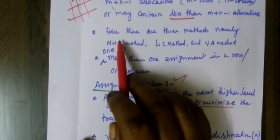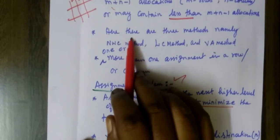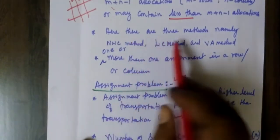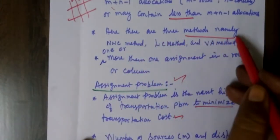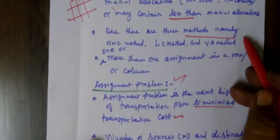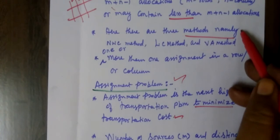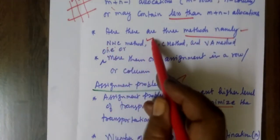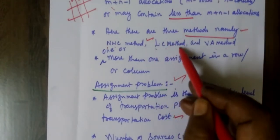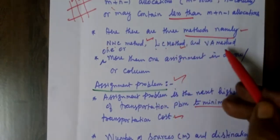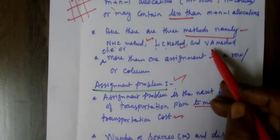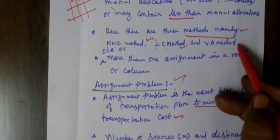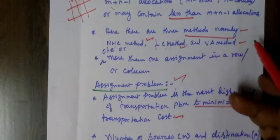Here there are three methods for the transportation problem: Northwest Corner method, Least Cost method, and Vogel's Approximation method. There are three methods.